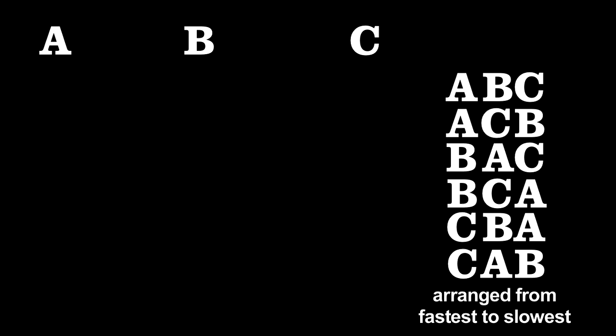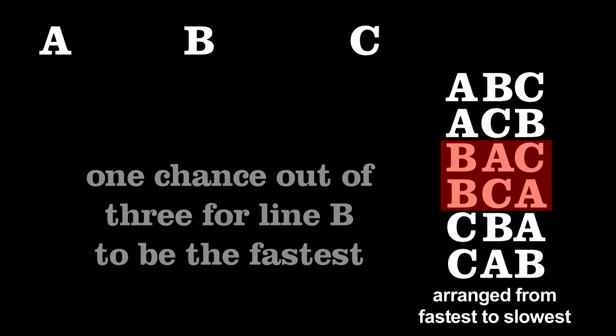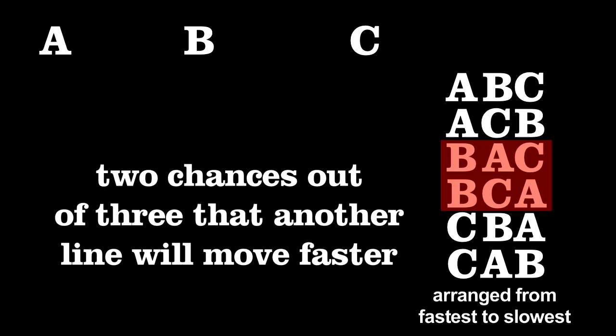Now, look at your line. Only twice out of six permutations did it come out in front. Thus, there's only one chance in three that it will be moving faster, and greater odds, two out of three, that one of the other lines will breeze past you.